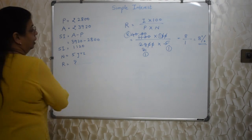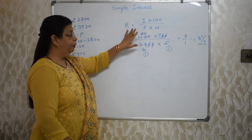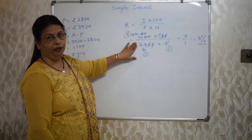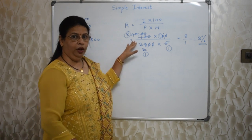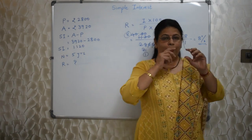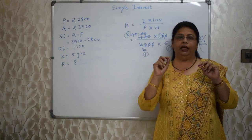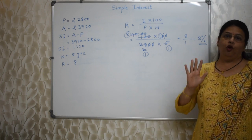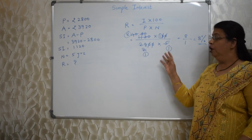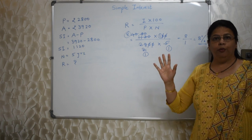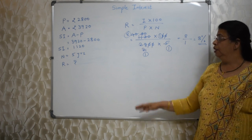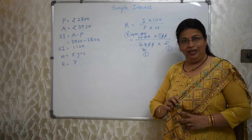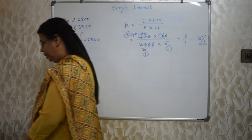I suggest you practice this kind of division where we cancel common factors between numerator and denominator. This type of calculation is very essential for competitive exams. We cannot do division the way we normally do in school — this method of cancellation saves a lot of time.